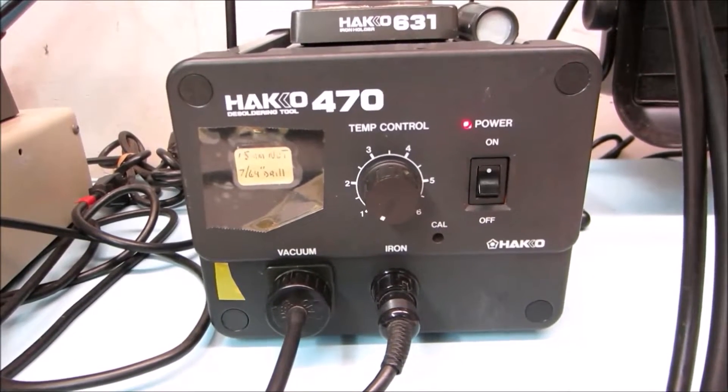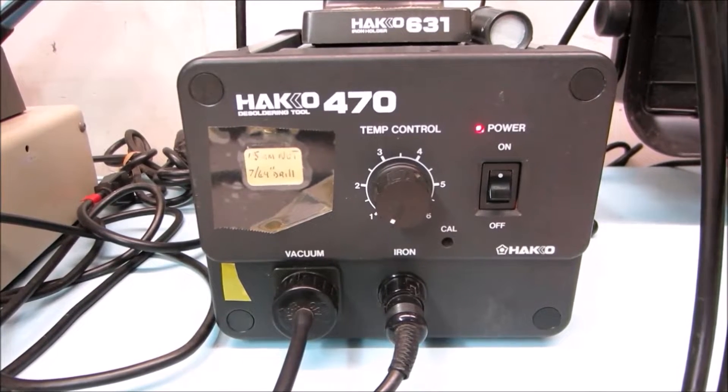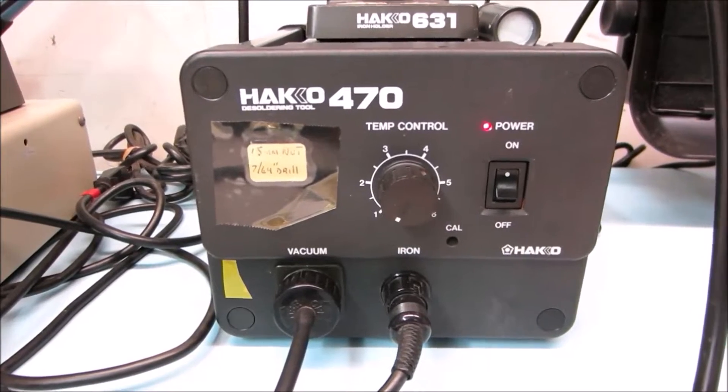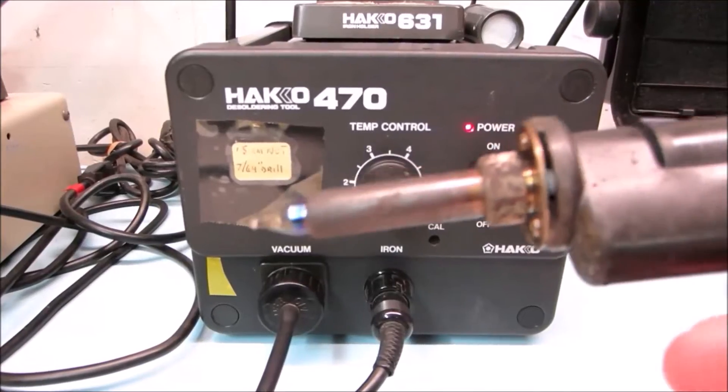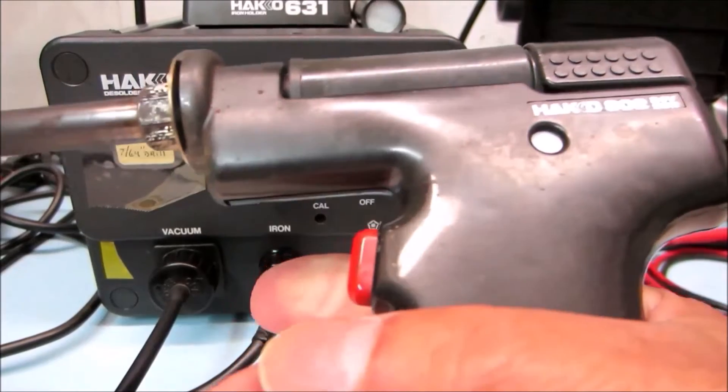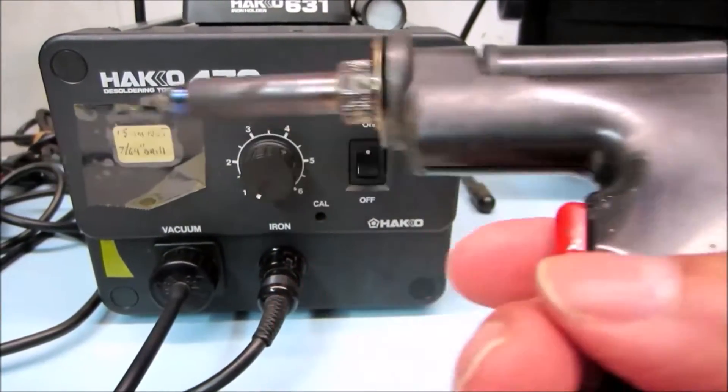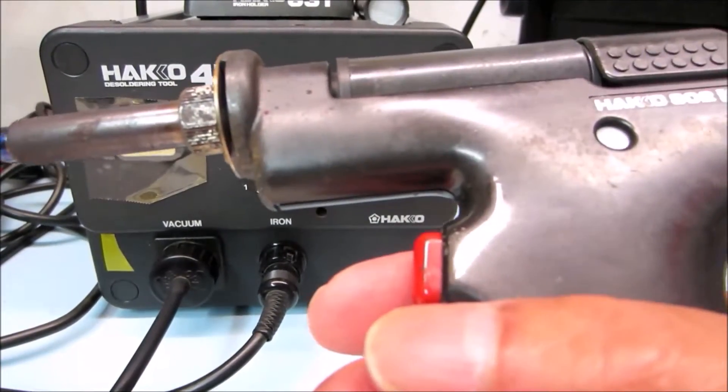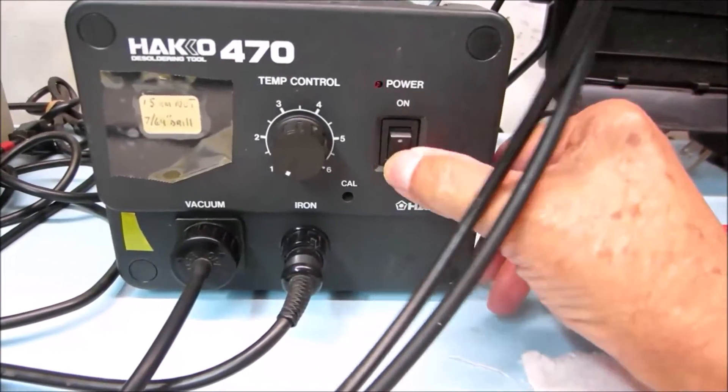So this is my Hakko 470 desoldering station. I've had it about 40 years, and recently it developed a problem where I had plenty of heat, plenty of suction. I'd pull the trigger, vacuum would come on, but when I released the trigger, the vacuum pump would not shut off. The only way I could shut off the vacuum pump once it was activated was to turn off the system.